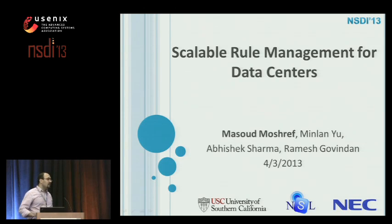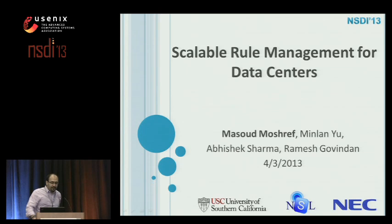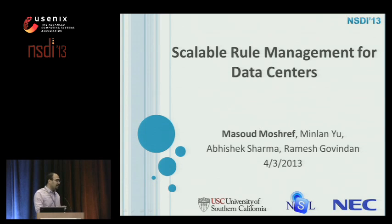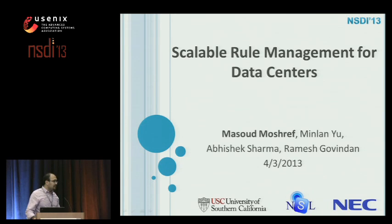When we find a feasible placement, we actually do not consider the previous placement because partitions can be migrated arbitrarily to minimize the traffic overhead. So this algorithm doesn't currently consider migration cost. There are similar algorithms in VM placement that, for example, don't want to migrate VMs too often, so maybe we can find similar approaches here.